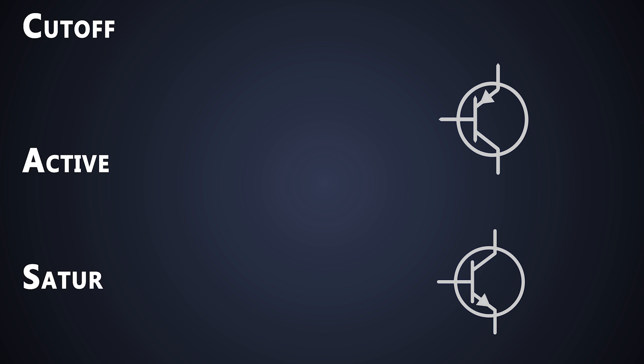Every transistor works in three different regions, which are cutoff region, active region, and saturation region. In the cutoff region, transistors are considered as off. The collector and emitter junction are reverse biased and there is no conduction in the transistor.